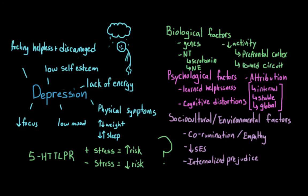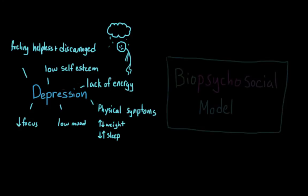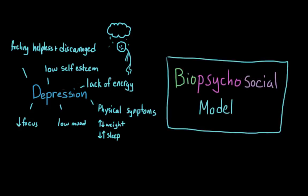So stepping back for a second, we said that we had biological factors, psychological factors, and sociocultural and environmental factors. And when we put all of these things together, we get what is referred to as a biopsychosocial model of depression. And this theory acknowledges that all of these factors play a role. So some people are genetically predisposed to the condition, but it only comes about if the situation is right or if we develop certain patterns of thinking.